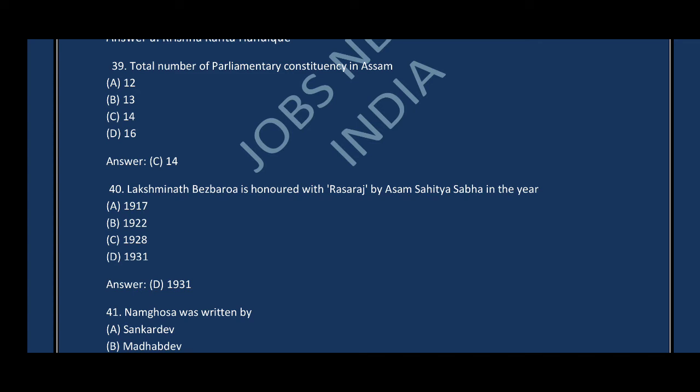Question number forty: Laxmikanta Bezbaroa was honoured with Rajaraswa by Assam Sahitya Sabha in which year? The correct answer is option C — 1931. Note: Option D will be the correct answer for question number forty.